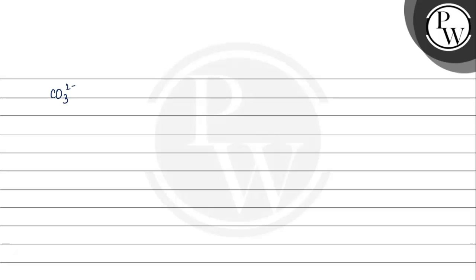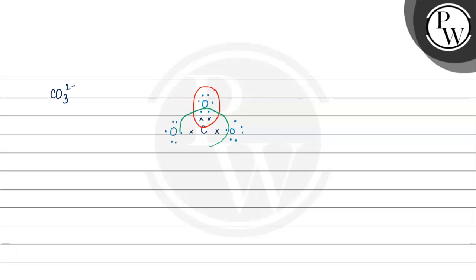Now we have the last one — the carbonate ion. Carbon is the central atom with 4 valence electrons. We add the oxygen atoms around it. After placing all electrons, carbon has 8 electrons around it satisfying the octet rule.